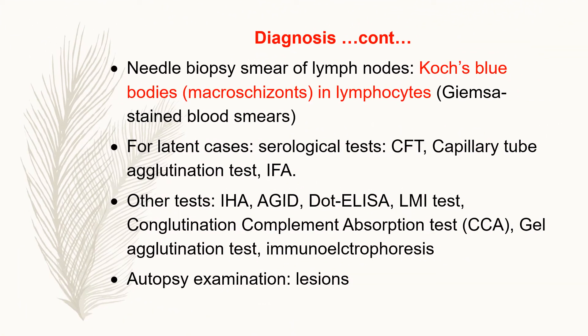Diagnosis is also easy to provide by needle biopsy smear of the lymph node. A needle is introduced and lymph material is aspirated from the lymph node. The smear is stained by Giemsa stain method. Koch's blue bodies — which are macroschizonts — are present inside the lymphocytes. This is a very characteristic and confirmatory diagnosis: presence of macroschizonts called Koch's blue bodies found in lymphocytes.